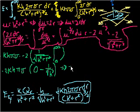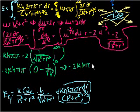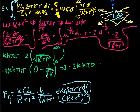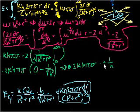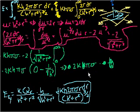So this becomes minus 2·k·h·π·σ times (0 minus 1 over the square root of h²). That equals minus 2·k·h·π·σ times 1 over h — which is just 1/h. The two minus signs cancel, and the h and 1/h cancel out. All we're left with, after all of that work, is 2kπσ.